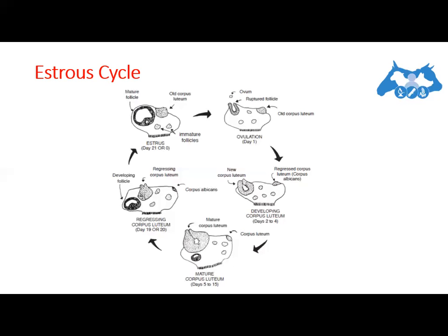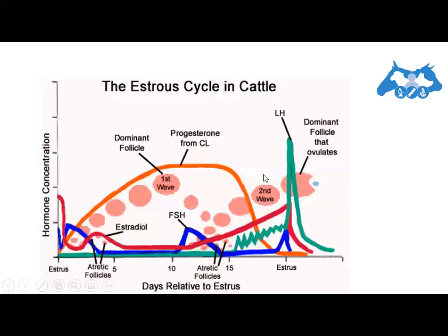The high estrogen concentration in the blood triggers a release of LH near the onset of heat. Following this surge in LH, the mature follicle ruptures to release the ovum, and the cellular tissue left behind becomes luteinized, forming a new corpus luteum. This means the cycle has returned to days one to two, and progesterone again becomes the dominant hormone.